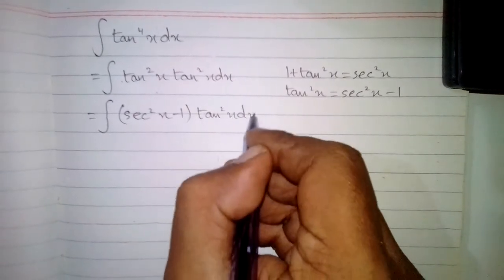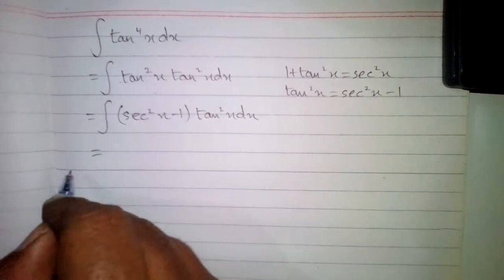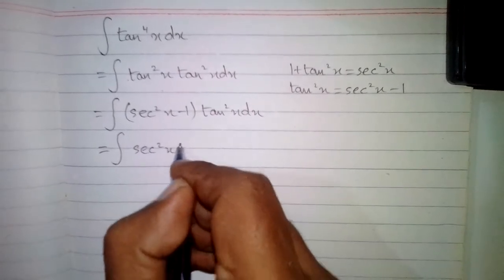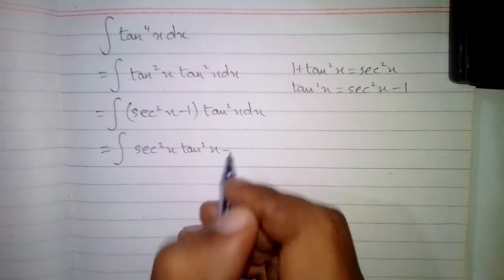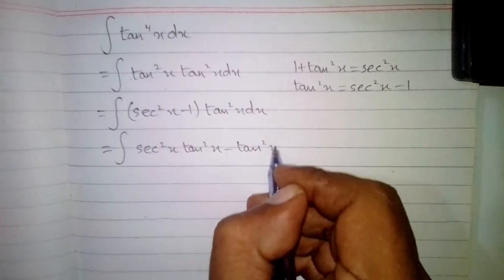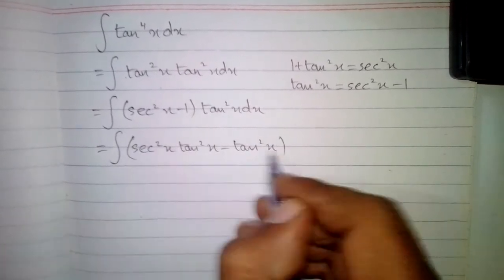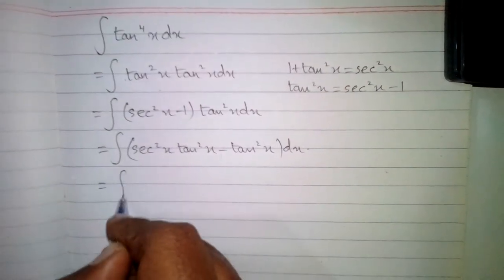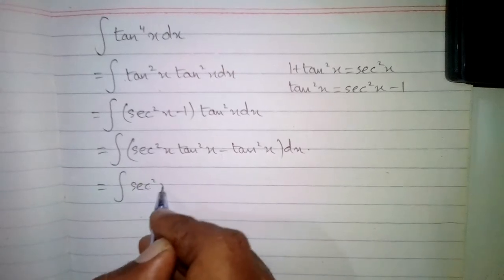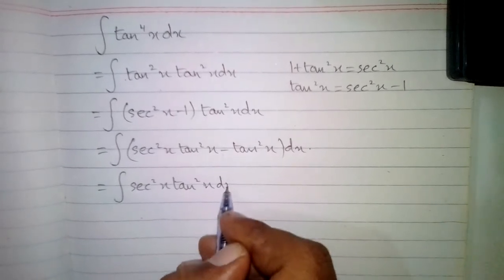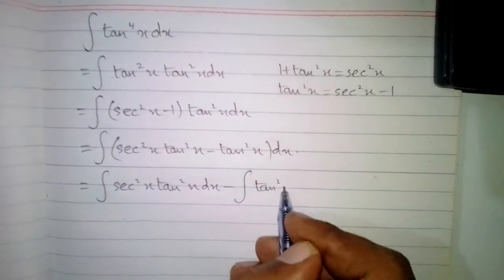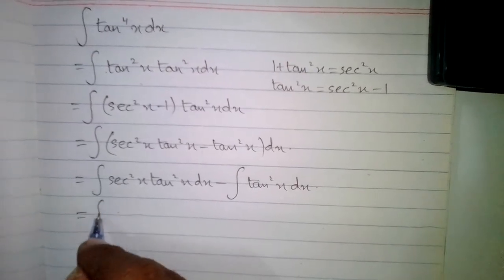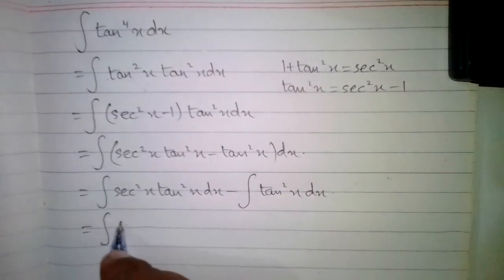So we have (sec²x minus 1) · tan²x dx. We can write this expression as sec²x · tan²x minus tan²x dx. Now we will apply the integral on both of these terms, so we have the integral of sec²x · tan²x dx minus the integral of tan²x dx.